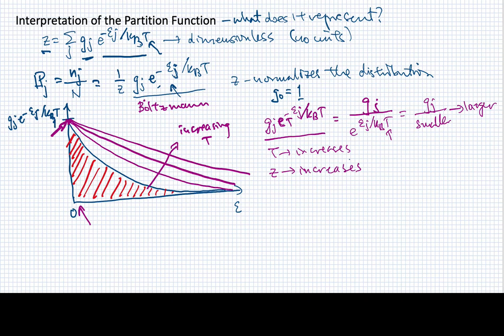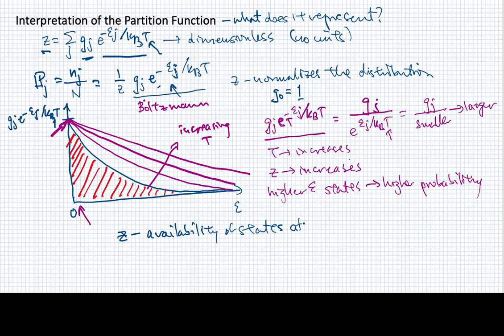But they are increasing, as T increases, the higher energy states have higher probability. So, we're populating those states even more. So, I would contend that a way that we can think of the partition function, a way that we can interpret it, is to say that Z is basically telling us about the availability of states at a given temperature, T.